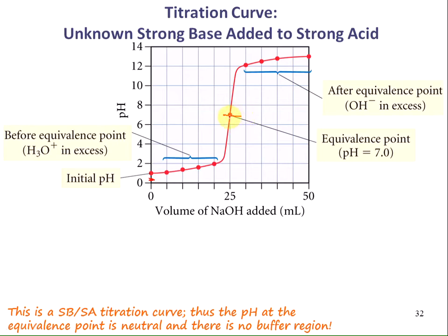After the equivalence point, if we still keep adding more sodium hydroxide, the sodium hydroxide is now in excess. The initial acid has all been consumed, and we have excess sodium hydroxide causing the pH to be higher than 7, so the solution is basic. Because this is a strong acid-strong base titration, the pH at the equivalence point is neutral, and there is no buffer region when you're titrating a strong acid and a strong base.